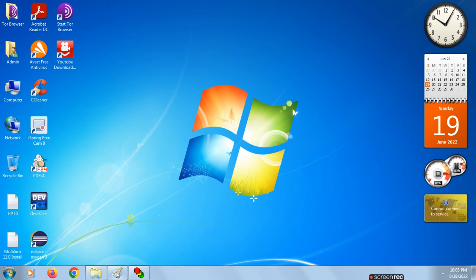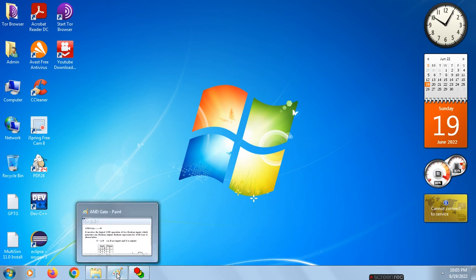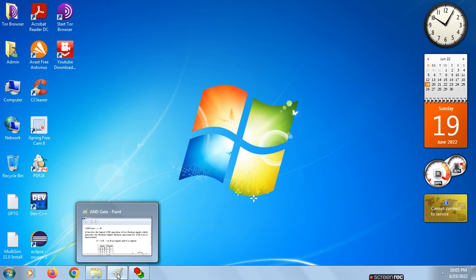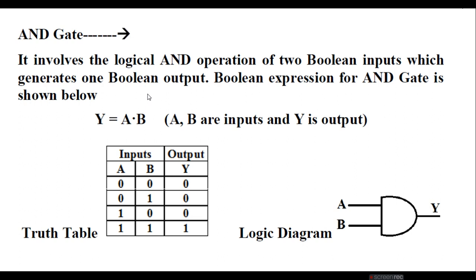The AND gate is a basic logic gate and a basic building block of all logic gates. It works as a basic building block in digital electronic circuits, that is digital logic design. It involves the logical AND operation of two boolean inputs which generates one boolean output. The boolean expression for AND gate is Y = A · B.